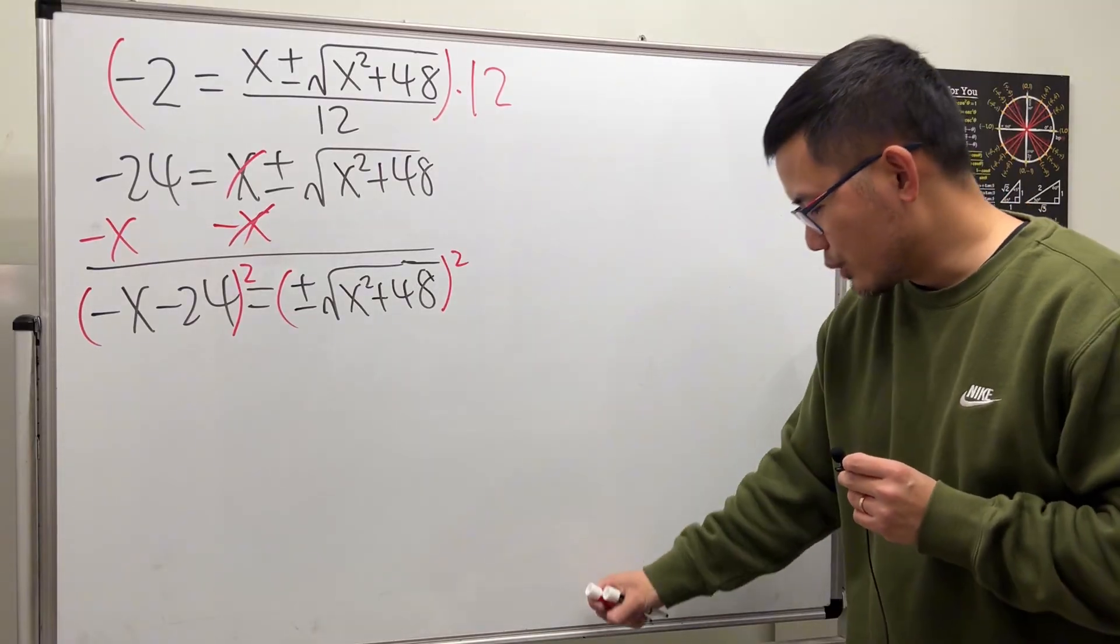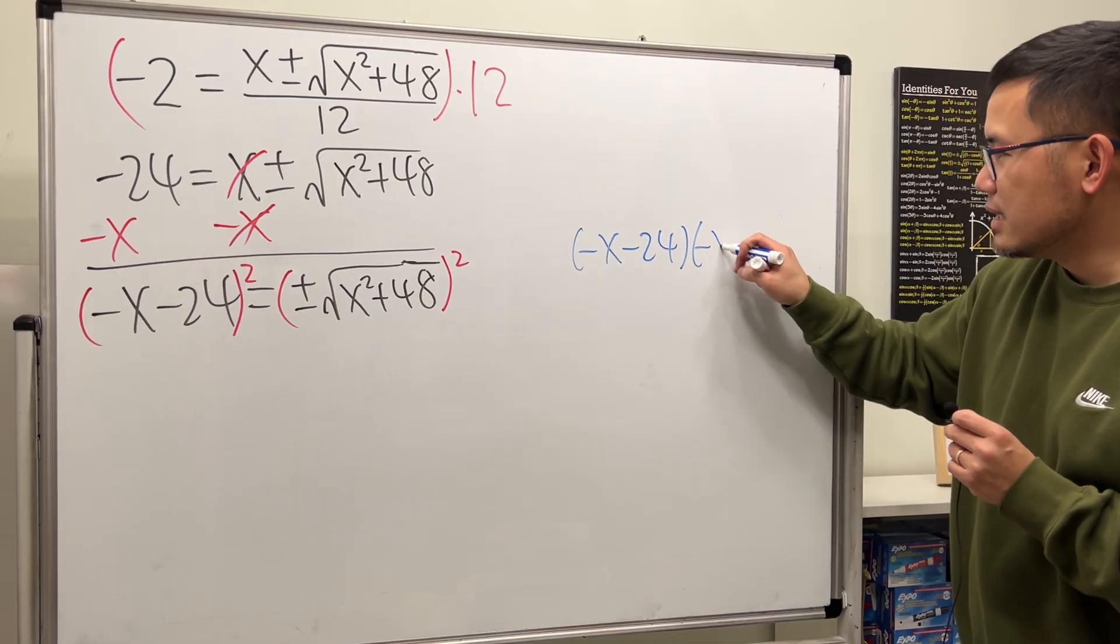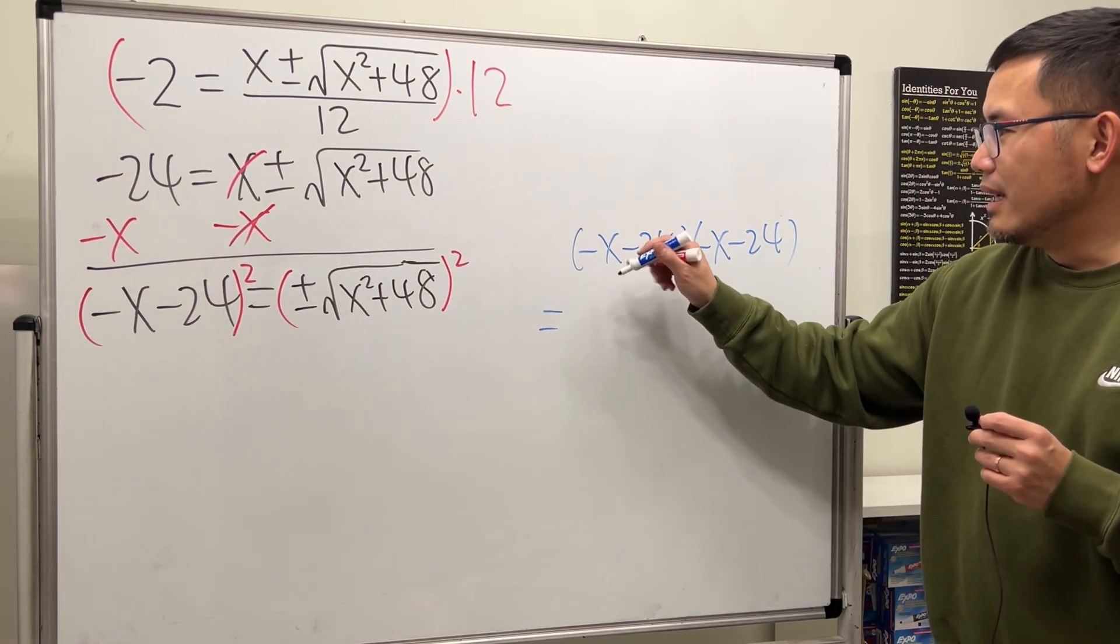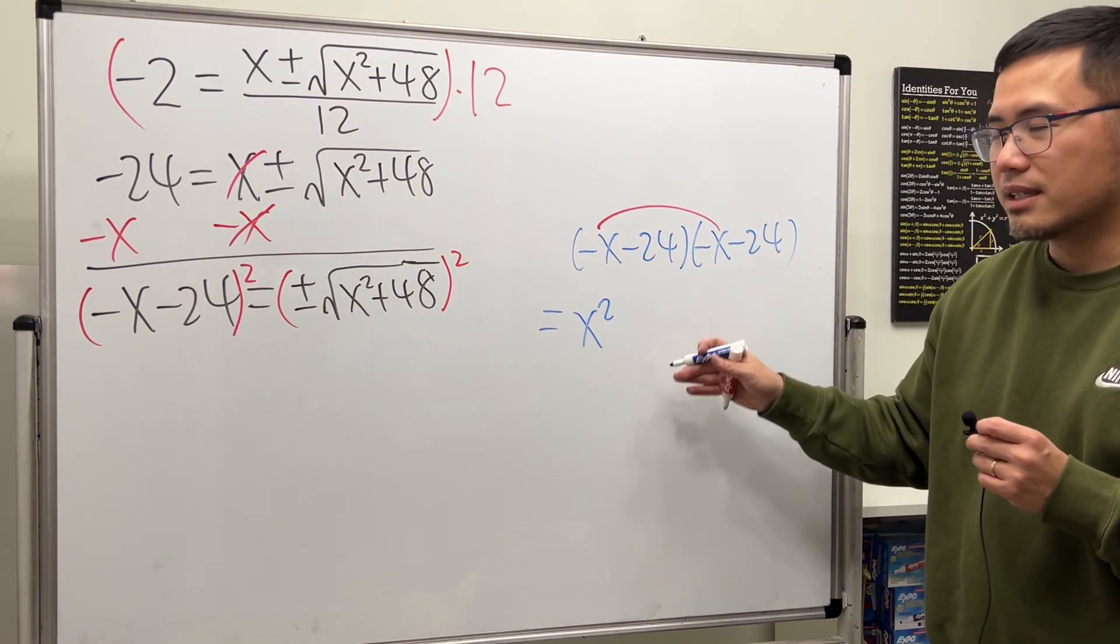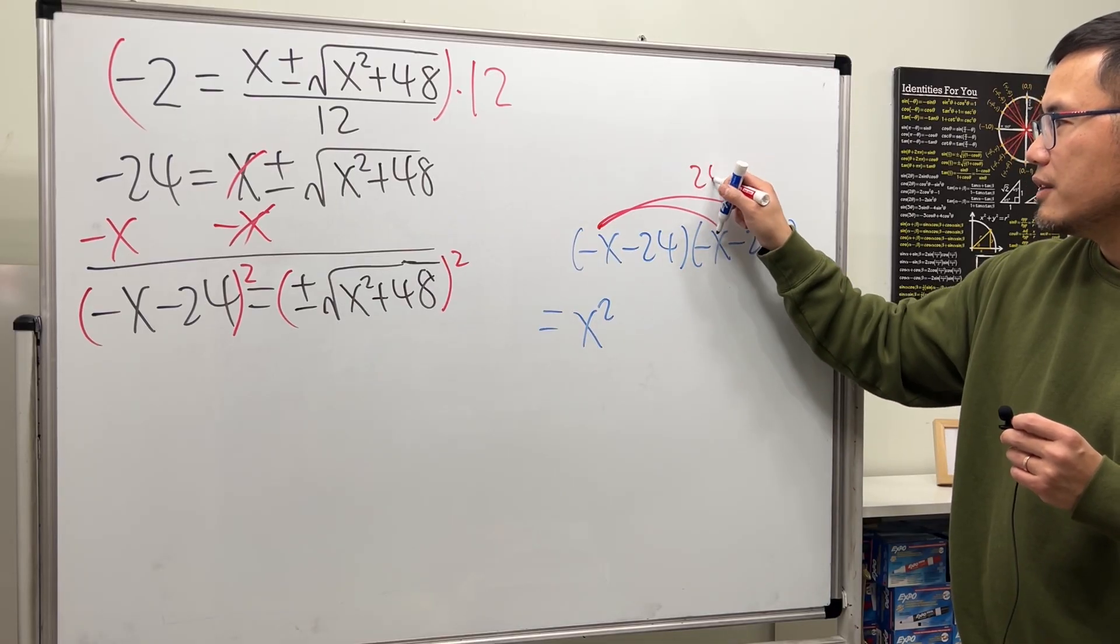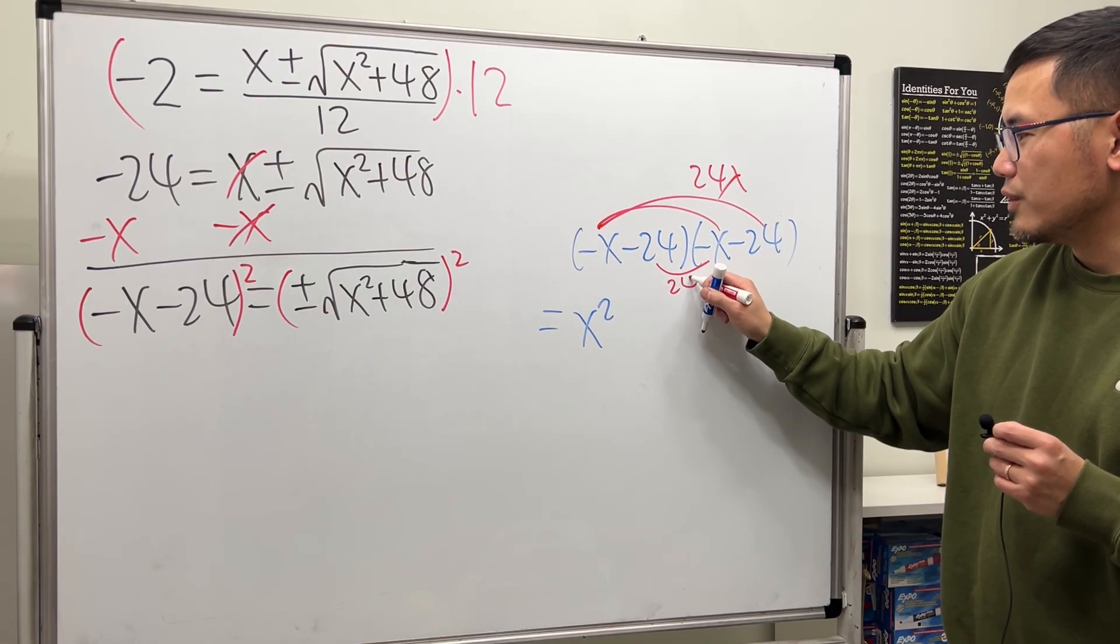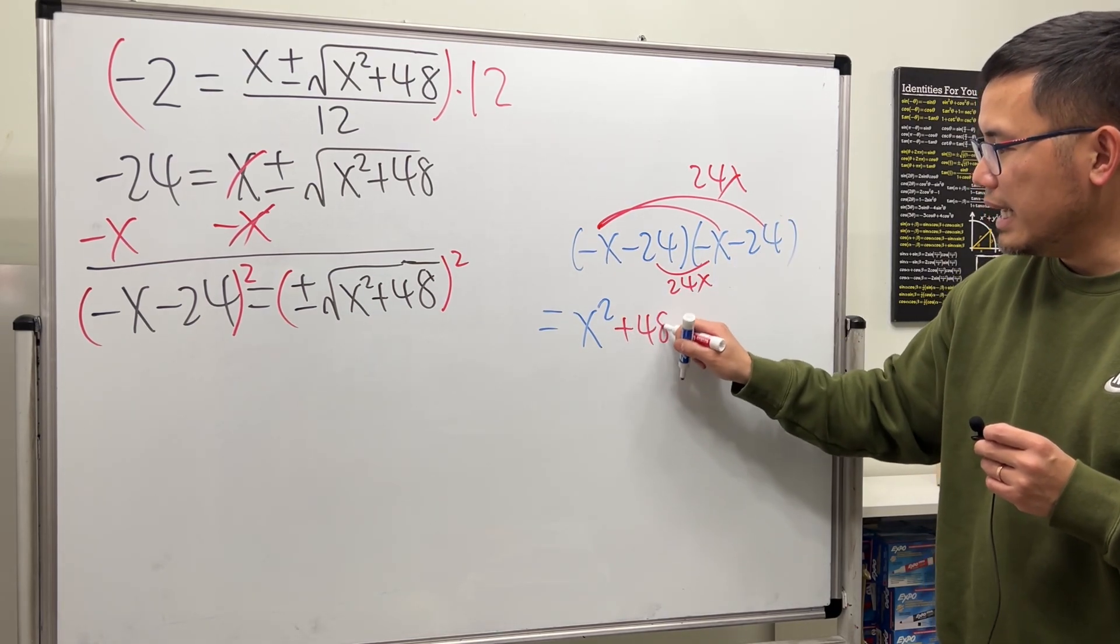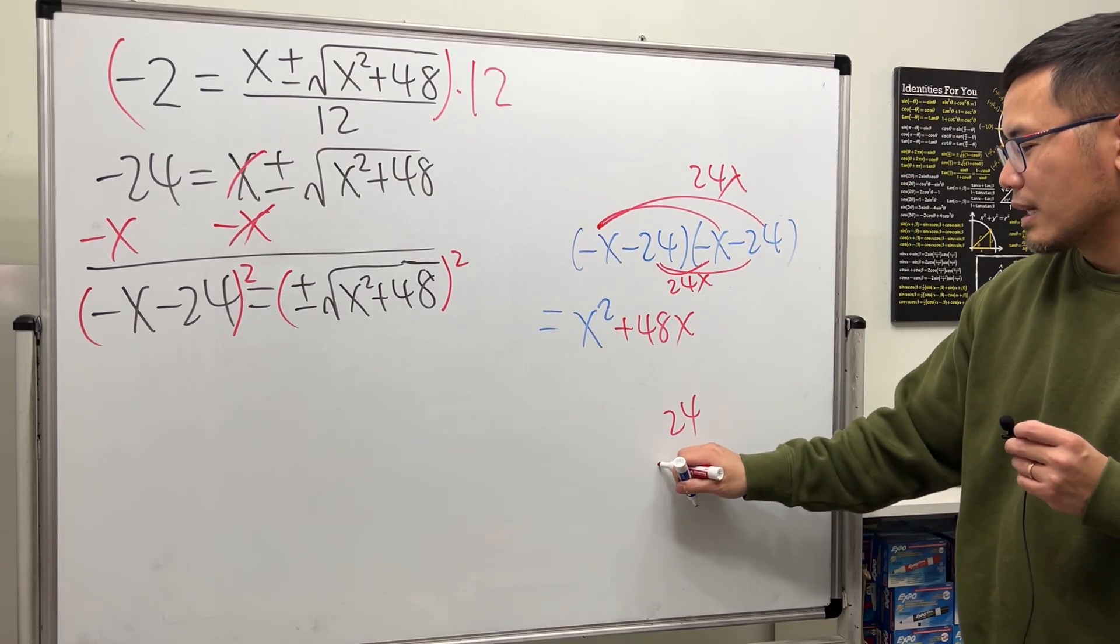Right here, we can work it out real quick somewhere. That's negative x minus 24 times negative x minus 24. Okay, x squared goes first. Negative x times negative x is x squared. This times this becomes positive 24x. And then from here to here, we have another 24x. So together, we have plus 48x. Lastly, this times that, 24 times 24.